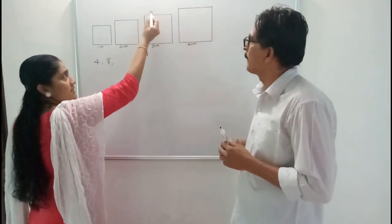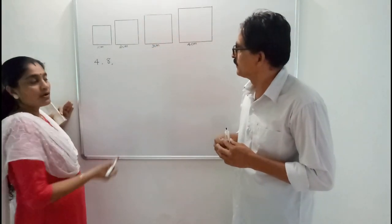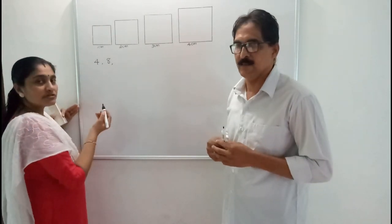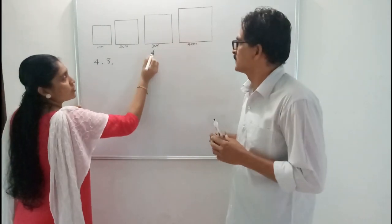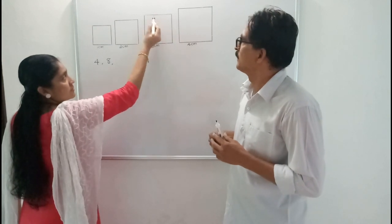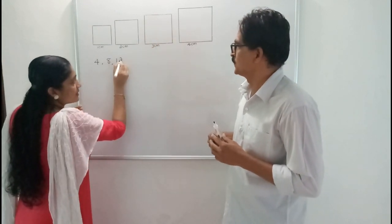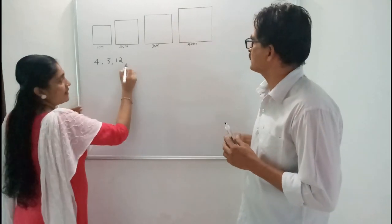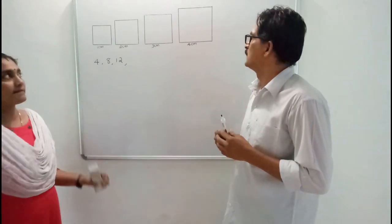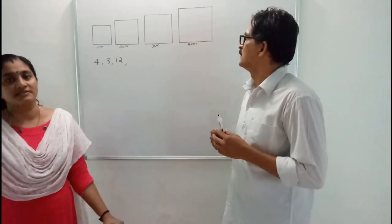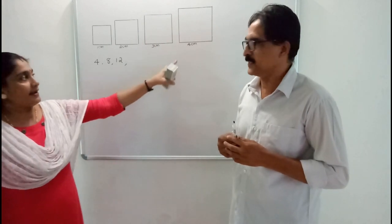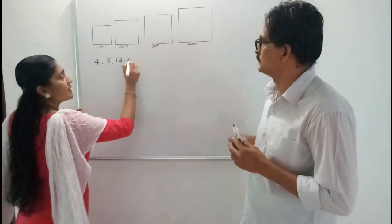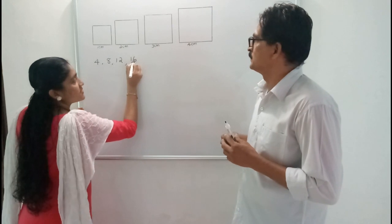For a square with side 3cm, the perimeter is 3 plus 3 plus 3 plus 3, that is 12cm. And for a square with side 4cm, the perimeter is 4 plus 4 plus 4 plus 4, that is 16cm.